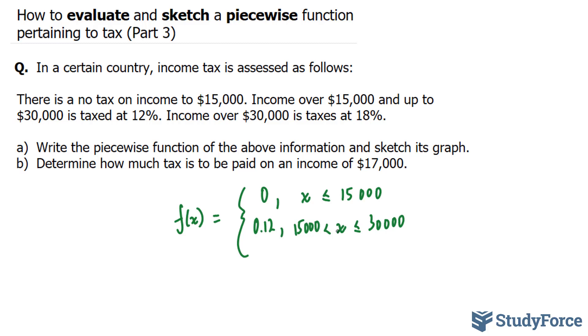And finally, you pay 18% when you make $30,000 or more. So when x is greater than $30,000, you will pay 18%. So now that we have our piecewise function, we have to sketch its graph. Let's do that.